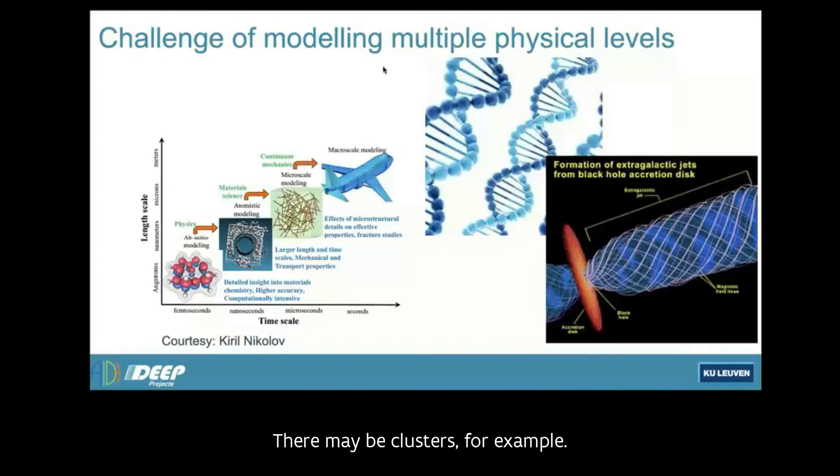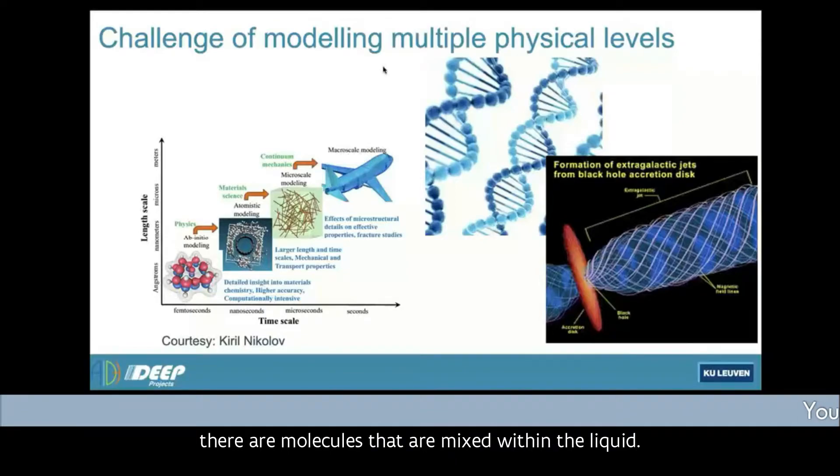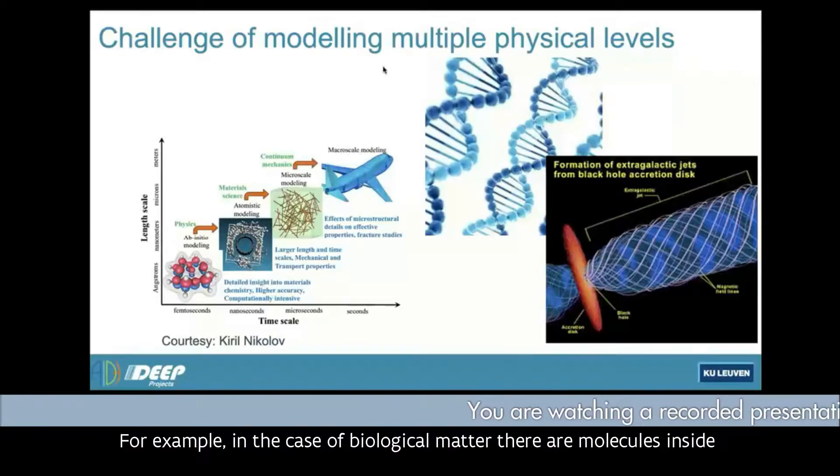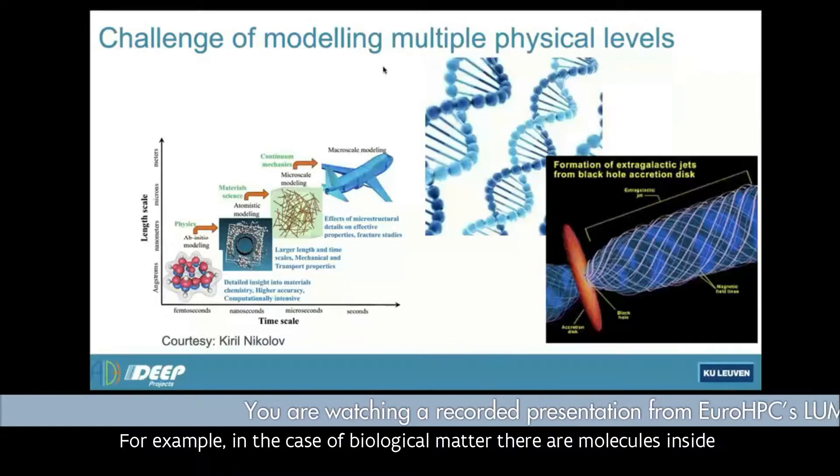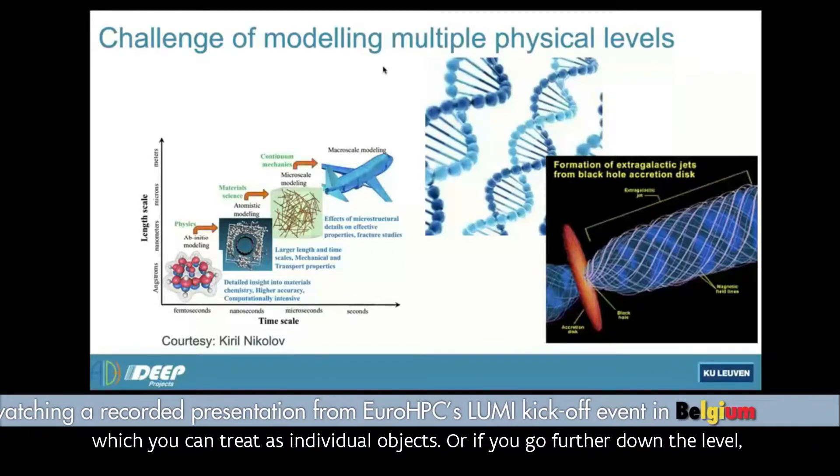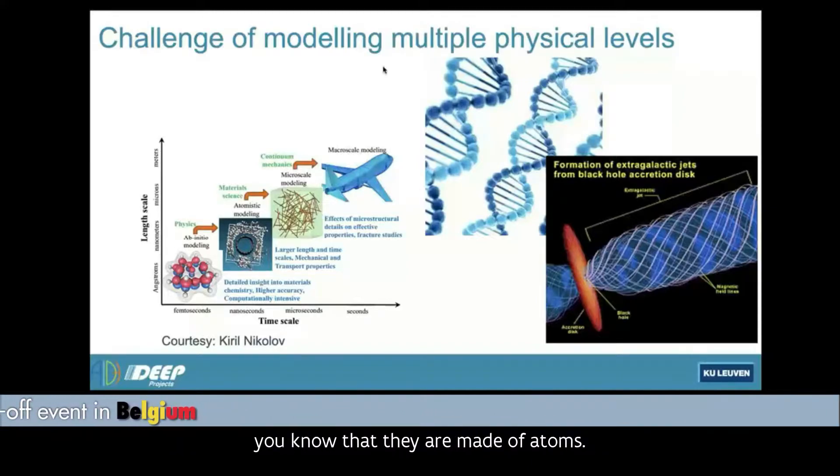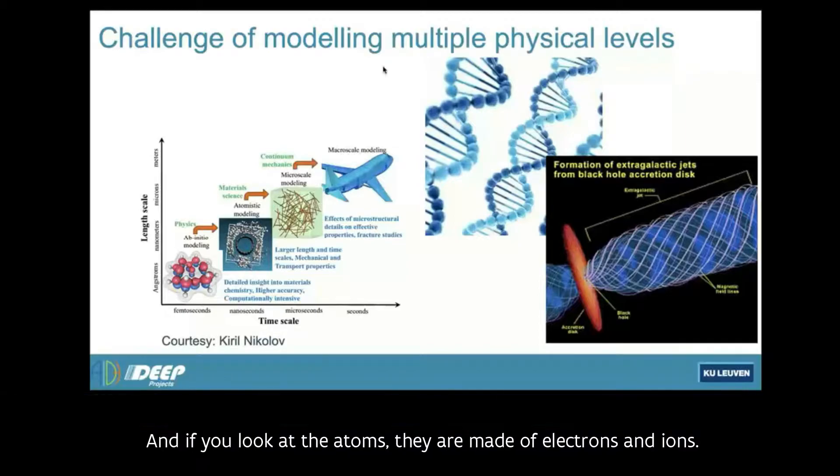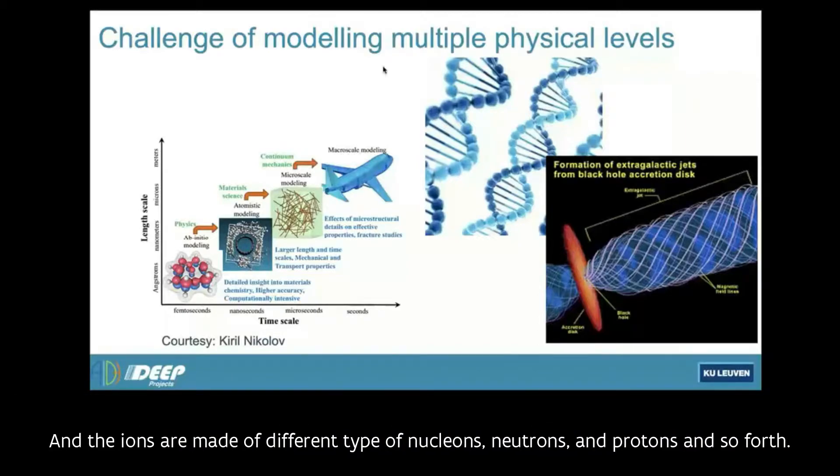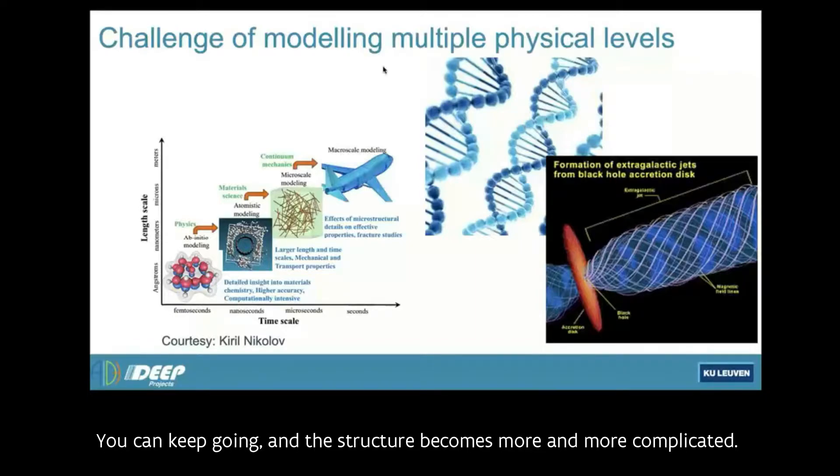There may be clusters, for example. If you look at the liquid, there are molecules mixed within the liquid. In the case of biological matter, there are molecules inside which you can treat as individual objects. Or if you go further down the level, you know they are made of atoms. If you look at the atoms, they're made of electrons and ions. The ions are made of different types of nucleons, neutrons and protons and so forth. You can keep going and the structure becomes more and more complicated. So often you're dealing with systems where you have to consider these different levels of description at the same time.